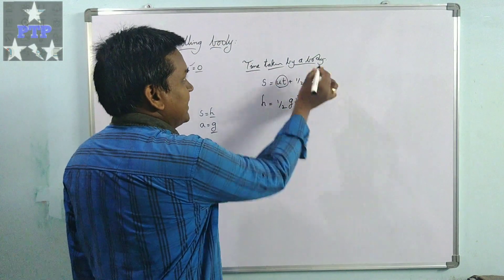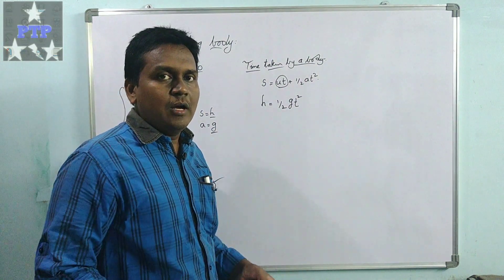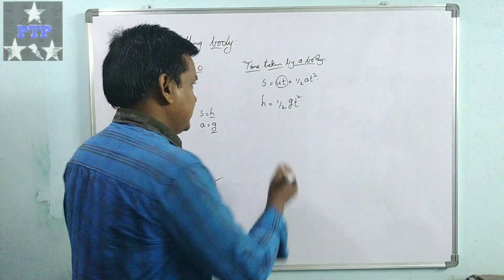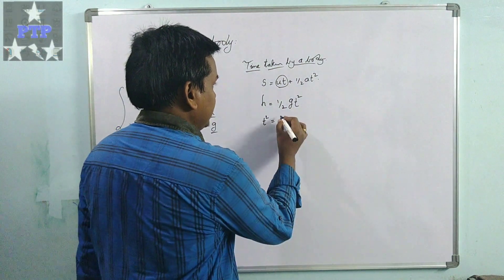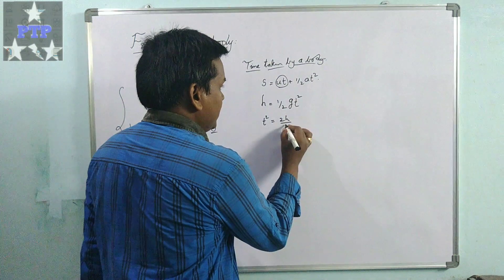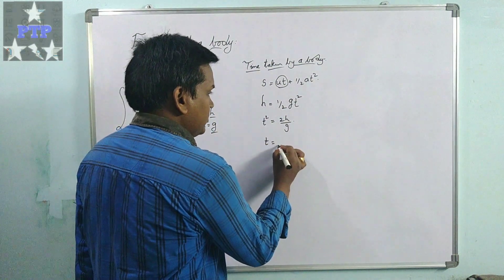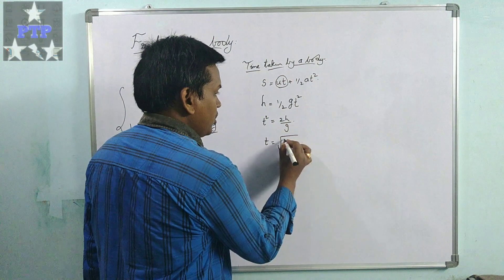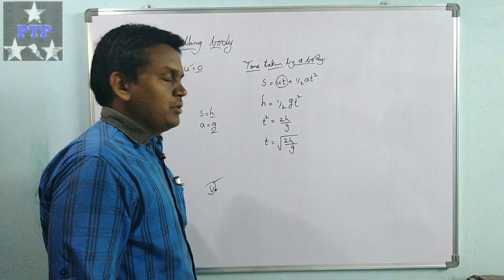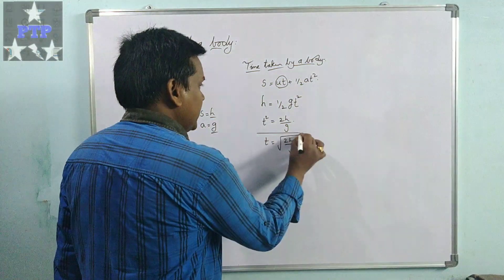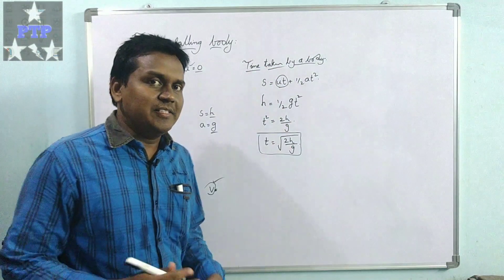We need the time taken by the body to reach the ground. So rearranging: t² = 2h/g, and therefore t = √(2h/g). This gives us the time taken by the body to reach the ground.